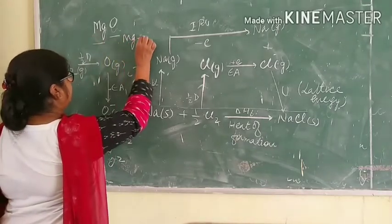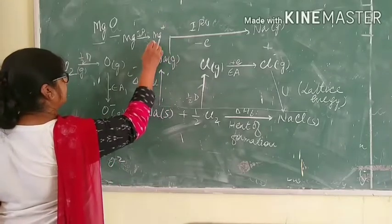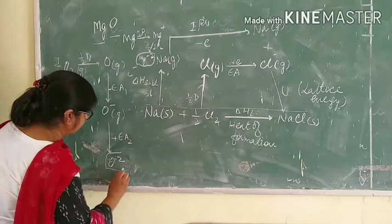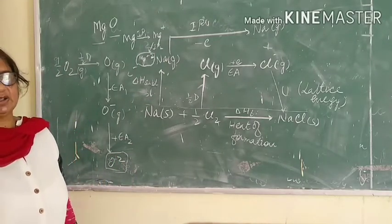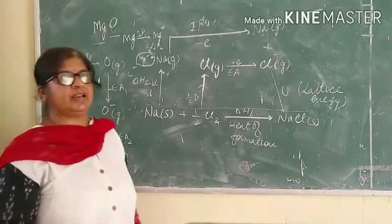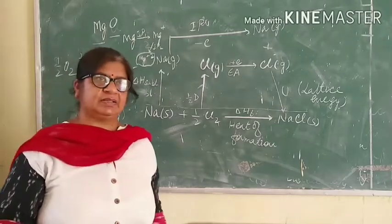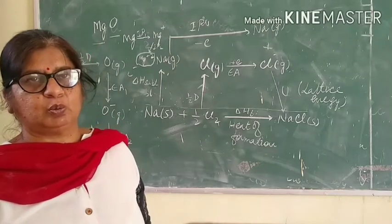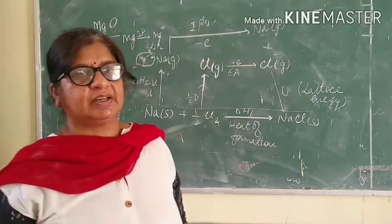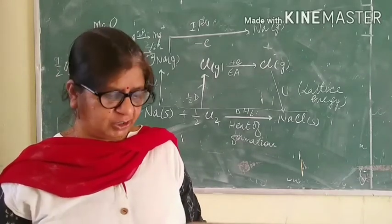Similarly, magnesium will have two ionization potentials: IP1 to form magnesium plus one ion, and IP2 to form the magnesium plus two ion. This magnesium²⁺ ion and the oxide²⁻ ion combine together to form magnesium oxide. Whether this magnesium oxide will be stable or not depends upon the total energy. We find that the total amount of energy released when the magnesium oxide molecule is formed is greater than the total amount of energy supplied for its formation.